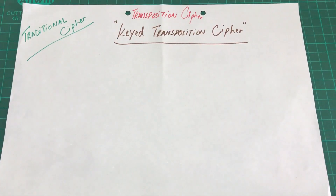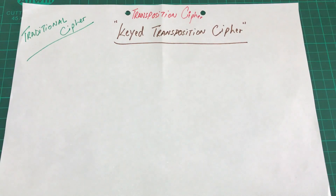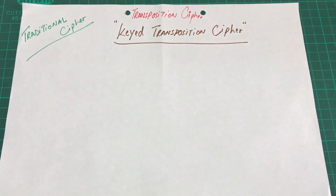We were looking at traditional ciphers, specifically substitution ciphers. Within substitution ciphers, we had mono-alphabetic and poly-alphabetic. In mono-alphabetic, if a letter appears multiple times in the plain text, the same letter in cipher text is mapped to the same letter. In poly-alphabetic, the same plain text letter might map to different alphabets or different letters.